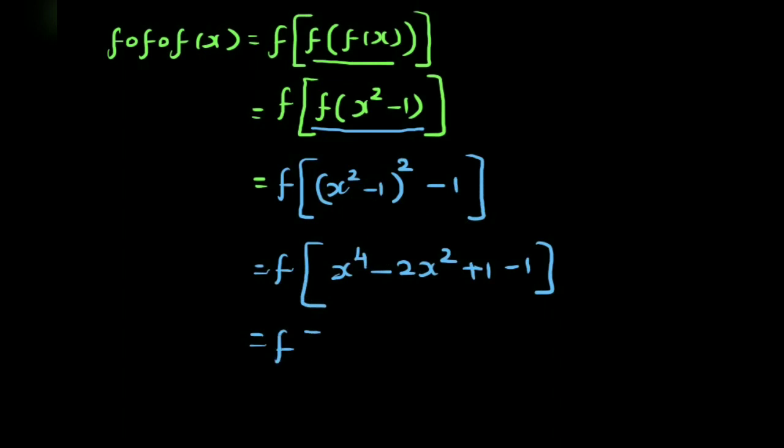Now we need to square x to the fourth minus 2x square. It's very simple. We use the a minus b whole square formula. So x to the fourth minus 2x square, the whole thing squared is x power 8 minus 4x power 6 plus 4x power 4.